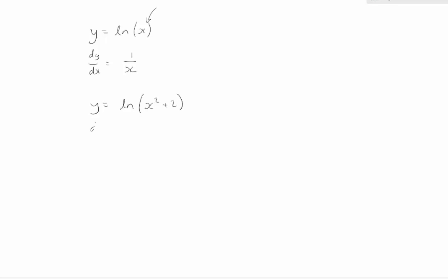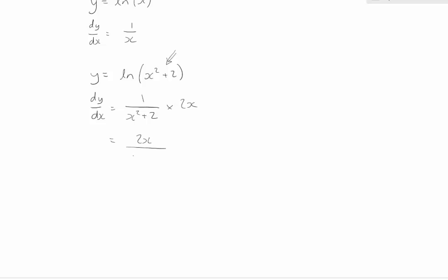When we differentiate this, we go dy/dx equals 1 over whatever is in those brackets. Then we multiply it by the derivative of the inside function. This is the chain rule in action, so in this case we multiply it by 2x. That gives us 2x over x squared plus 2.